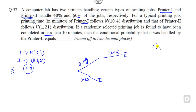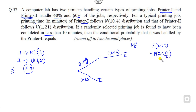Since Printer 1 follows a normal distribution, we convert to the Z-score: Z = (X − μ) / σ. Here, X = 10, mean μ = 10, and σ = √4 = 2. So Z = (10 − 10) / 2 = 0. Therefore P(E | Printer 1) = P(Z < 0) = 0.5.